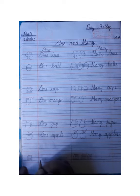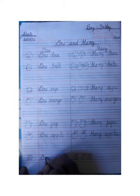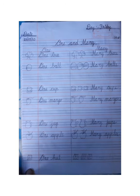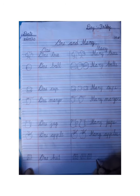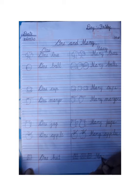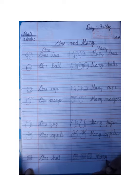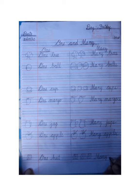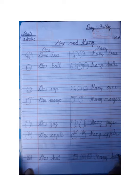This side has one hat, so we will write: One — O-N-E — hat, H-A-T. One hat. And on this side there are many hats, so we will write: Many hats, H-A-T-S. Many hats.